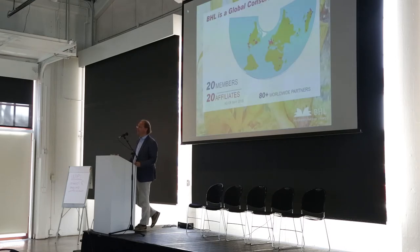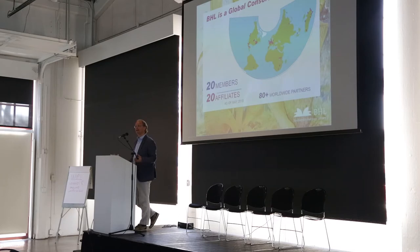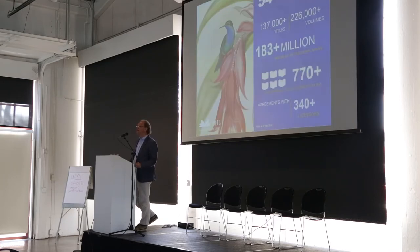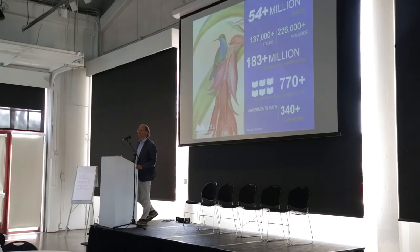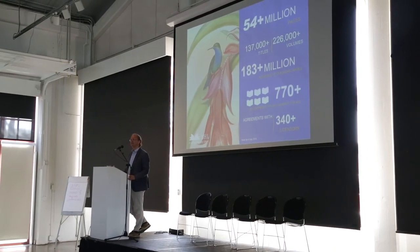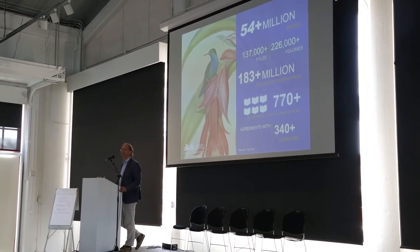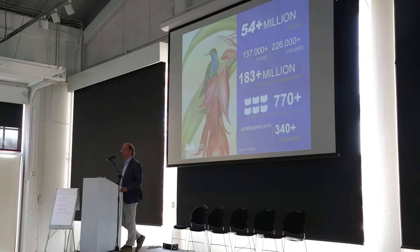We are a global consortium with 20 members, 20 affiliates, and over 80 total contributors around the world, all on an open access platform so that people can use it and reuse it in different ways. We have about 54 million pages of text already available, about 220,000 volumes. So it is that large library that Darwin was looking for.